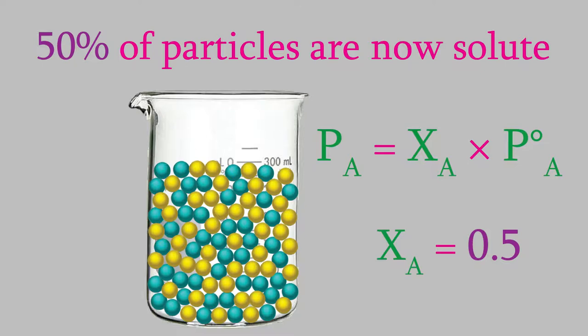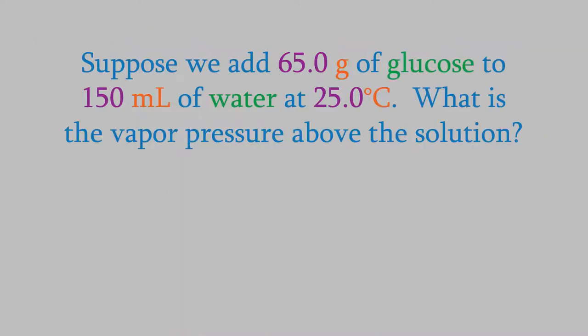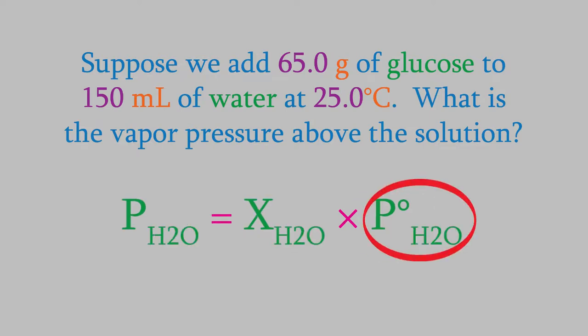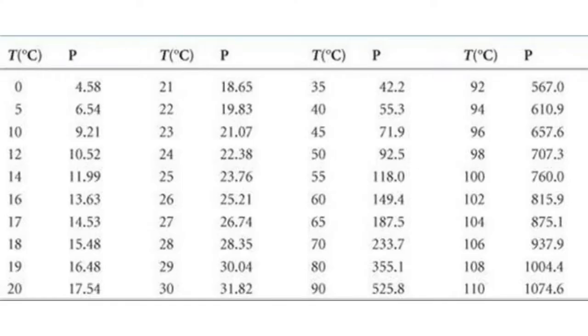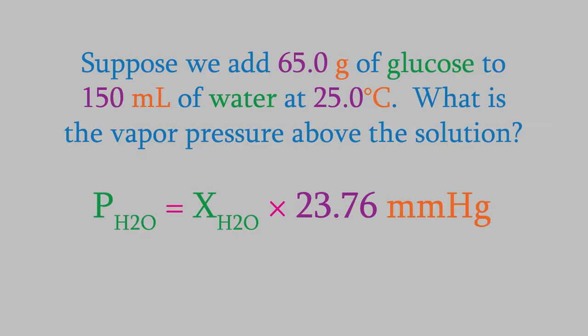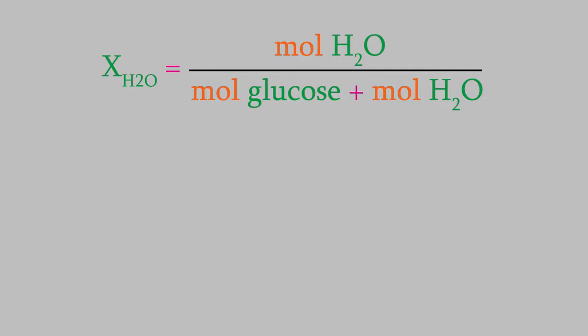Let's try an example. Suppose we add 65.0 grams of glucose to 150 milliliters of water at 25 degrees Celsius. What will be the vapor pressure above the solution? To find out, we'll use our equation. We need the vapor pressure of the pure solvent, which is water. We can get that from Appendix B in our textbook. As we saw earlier, it's 23.76 millimeters of mercury. We also need the mole fraction of water. We talked about that in the previous video. It's the moles of water divided by the total moles of all the ingredients. In this case, that's glucose and water.